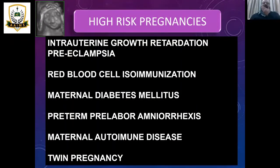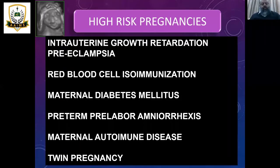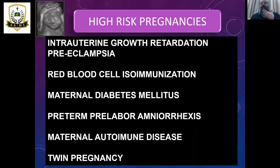In high-risk pregnancies, conditions include intrauterine growth restriction due to pre-eclampsia, red blood cell isoimmunization, maternal diabetes mellitus, preterm pre-labor, maternal autoimmune disease, and twin pregnancies. These are all high-risk conditions, and at the top of the list is IUGR.